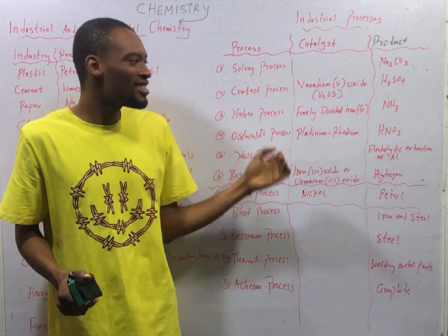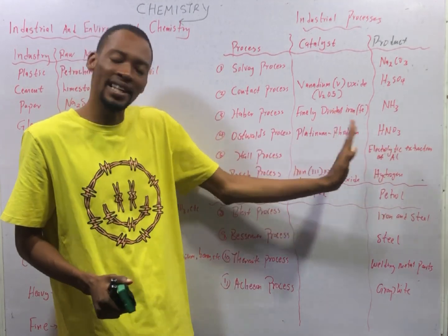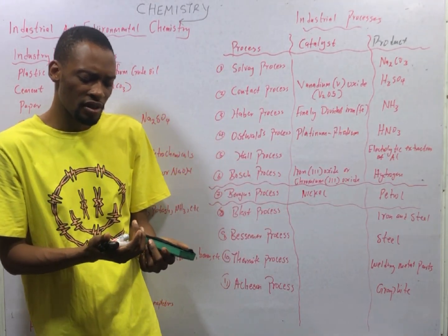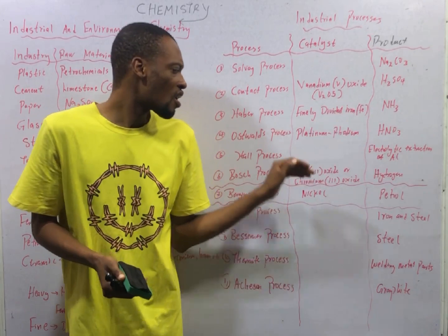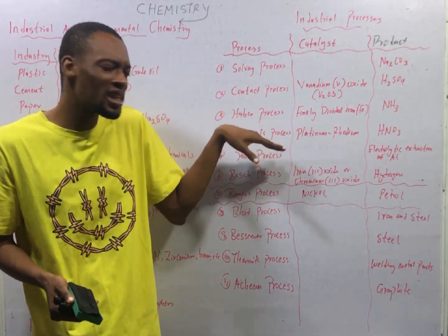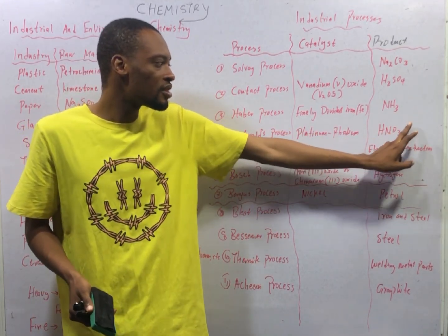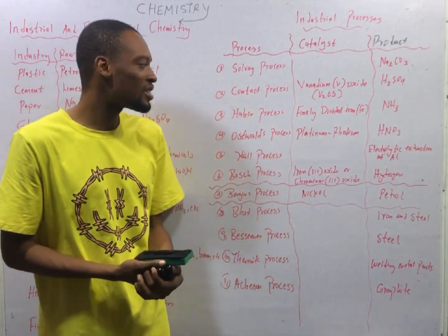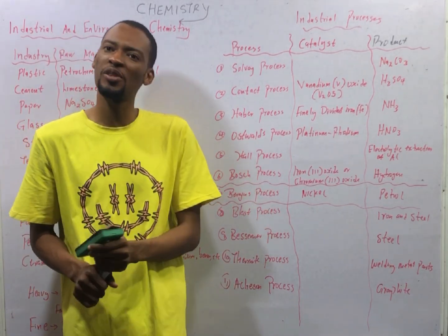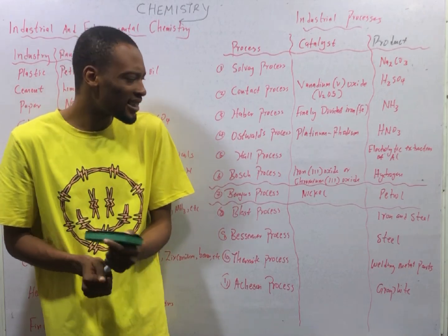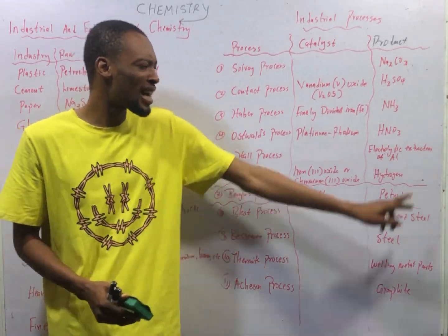The Haber process is the industrial process used to manufacture ammonia, and the catalyst used is finely divided iron — meaning powdered iron. The Ostwald process is the industrial process used in making trioxonitrate(V) (nitric acid, HNO₃). The Hall process is the process used for electrolytic extraction of aluminum — so aluminum is extracted via the Hall process.